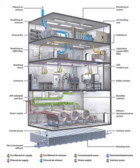At Biosafety Level 2, all precautions used at Biosafety Level 1 are followed, and some additional precautions are taken. BSL 2 differs from BSL 1 in that laboratory personnel have specific training in handling pathogenic agents and are directed by scientists with advanced training. Access to the laboratory is limited when work is being conducted. Extreme precautions are taken with contaminated sharp items. Certain procedures in which infectious aerosols or splashes may be created are conducted in biological safety cabinets or other physical containment equipment. Biosafety Level 2 is suitable for work involving agents of moderate potential hazard to personnel and the environment. This includes various microbes that cause mild disease to humans, or are difficult to contract via aerosol in a lab setting.